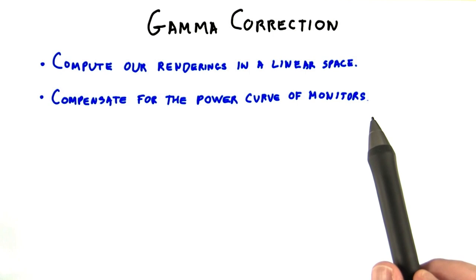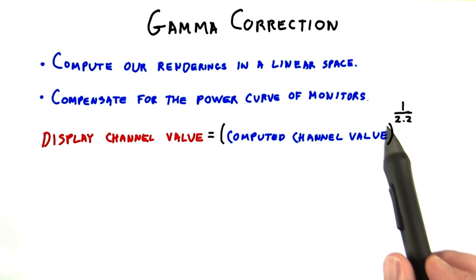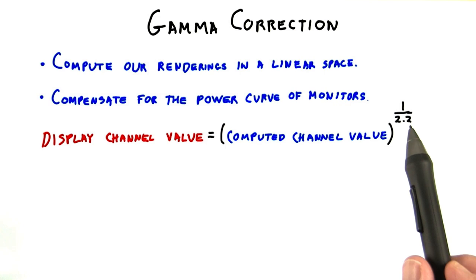At its simplest, the equation's just this. You take the computed channel value, you raise it to the 1 over 2.2 power, and that gives you the value you need to display. This value of 2.2 is called the gamma correction value.